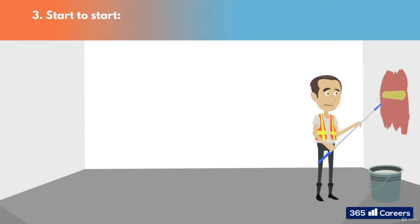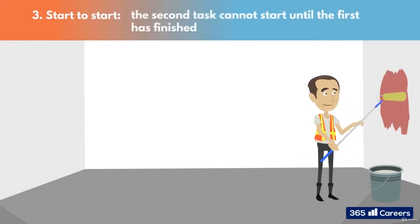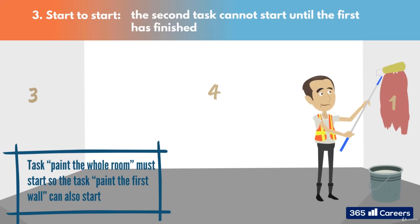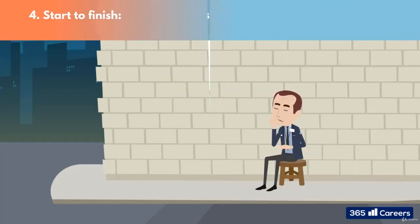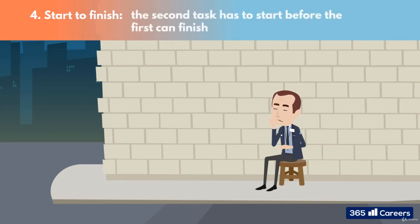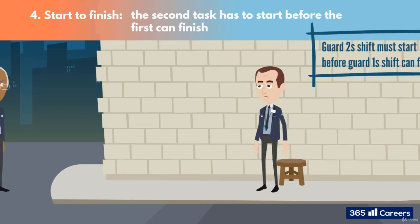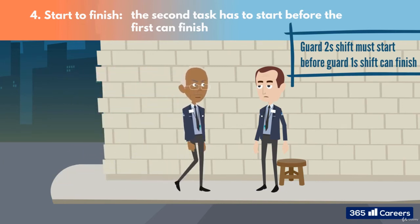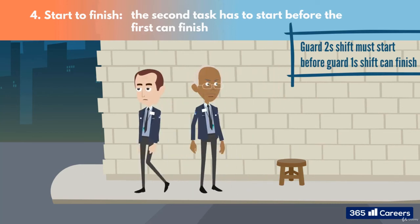Third is start to start, where the second task can only start when the first starts. The task 'paint the whole room' must start so the task 'paint the first wall' can also start. And lastly, the not-as-common start to finish, where the second task has to start before the first can finish. Let's imagine the construction site needs 24-hour security: Guard 2's shift must start before Guard 1's shift can finish, so there will be no interruption in the surveillance for any thieves to sneak in.